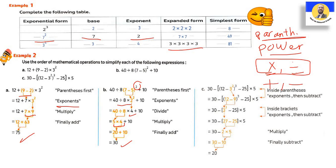Letter C: 30 - (12 - 3²)³ - 25 ÷ 5. أول حاجة جوة الـBracket فيه Power، فنعمل الـPower الأول: 3² = 9. وبعدين 12 - 9 = 3. هتبقى بعد كده 3³ = 27. 27 - 25 = 2 اللي هو الـBracket. بعد كده معنا 2 × 5، فنعمل الـMultiply الأول: 2 × 5 = 10. يبقى 30 - 10 = 20.